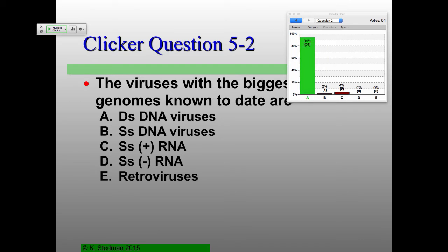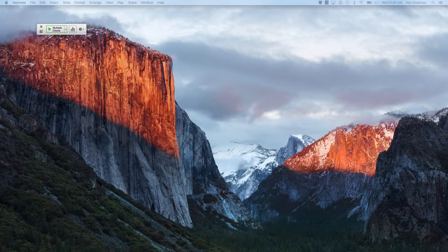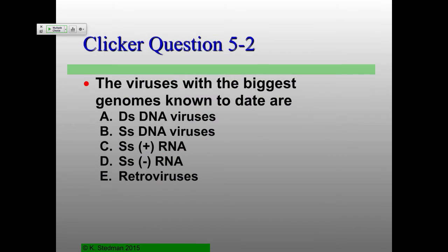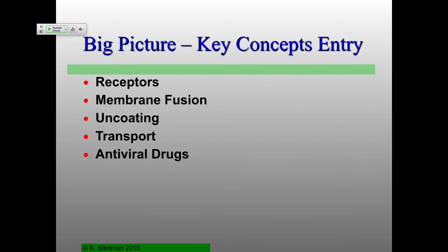Not quite 100%, but close. The largest ones are in fact those with double-stranded DNA genomes — the megaviruses, the mimiviruses, the pandoraviruses, the pithoviruses, etc. So let's switch gears a little bit and talk about entry.